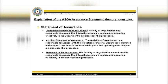Unmodified Statement of Assurance means reasonable assurance that internal controls are in place and operating effectively. Modified Statement of Assurance means the organization has reasonable assurance with the exception of a material weakness identified in the report. Statement of No Assurance means the organization cannot provide reasonable assurance that internal controls are in place and operating effectively. Please watch the step-by-step instructions provided by ASA FM&C.